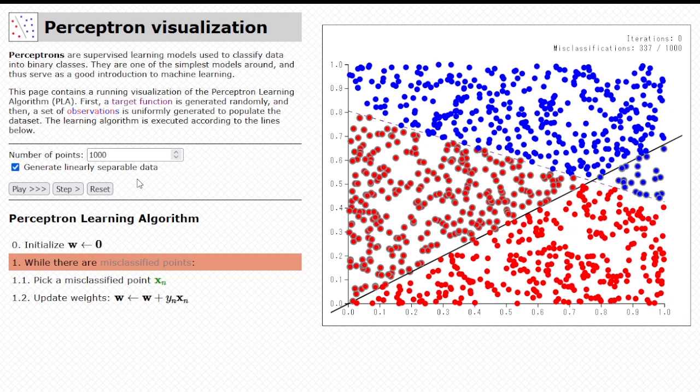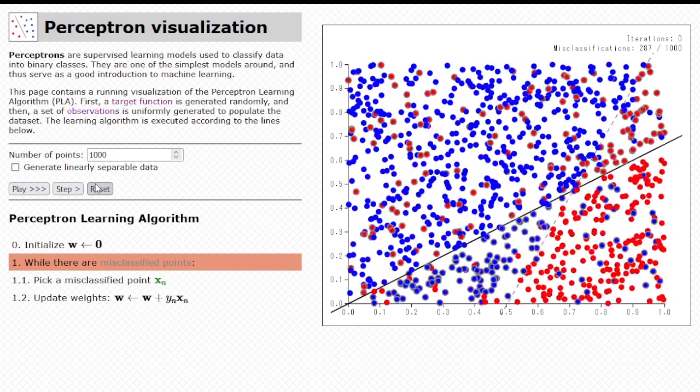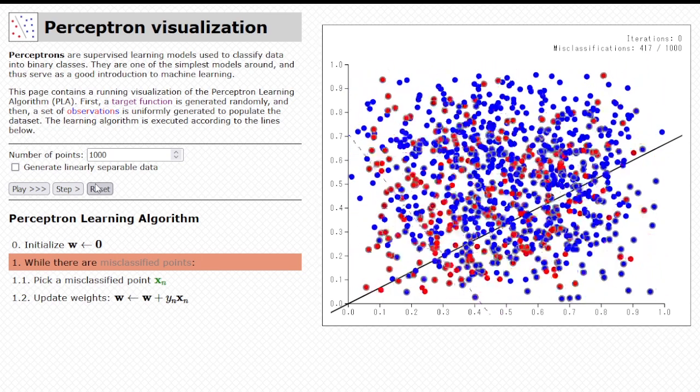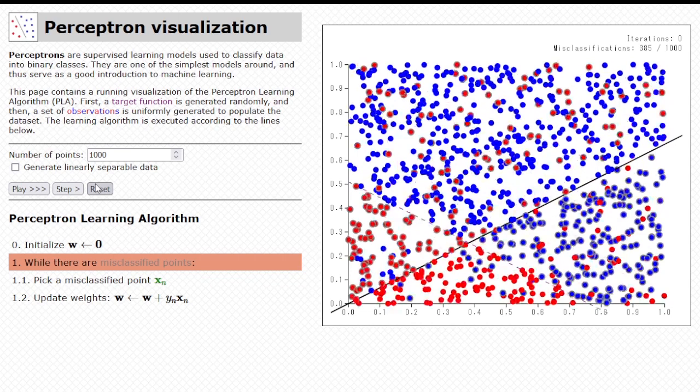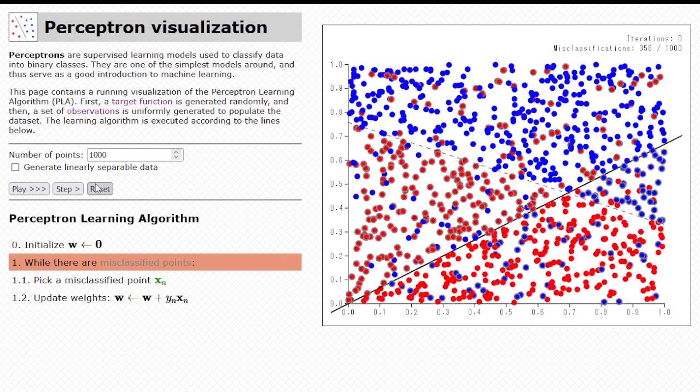Another thing that we can do is to change up the generate linearly separable data, right? Because, for example, let's toggle this off and then click reset. Now you can see that the data set is not linearly separable. That is not a target function, a linear target function that can correctly classify all the points, right? So the perceptron can never achieve zero training error.